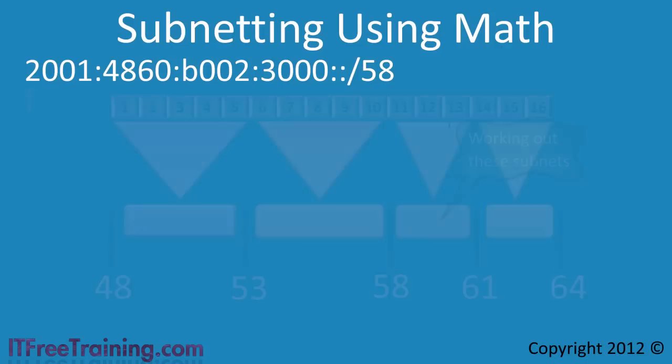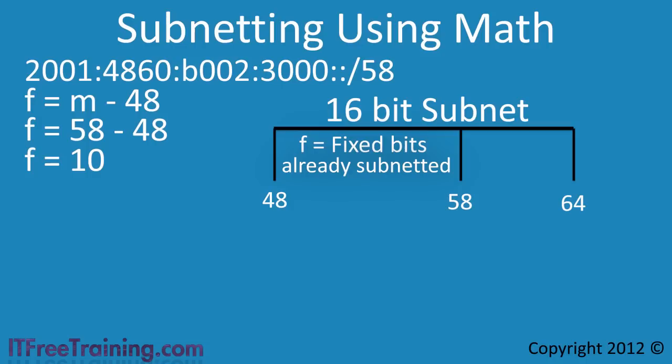The first formula is F equals M minus 48. The value M is the prefix length of the address that is being subnetted. In this case it will be 58. This gives us a value for F of 10. F is the number of bits in the subnet that are fixed and we can't use to subnet.